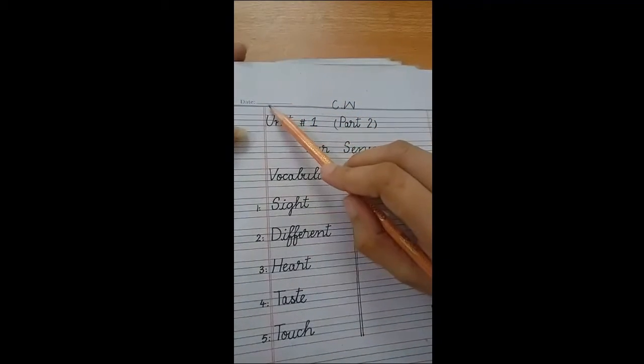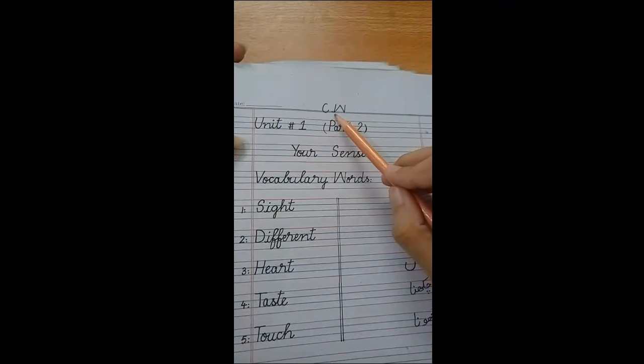First, we will draw a margin line with the gap of two fingers. Okay, on the top of the line, on the left side, we write the date. In the center of the line, we will write class work. Okay, on the right side of the line, we will write the day.